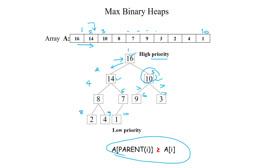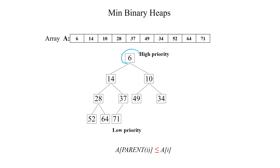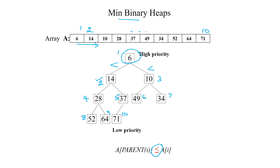In the min heap, the smallest element is at the root and gets the highest priority. The parent value is always less than its children — for example, 6 is less than its children 14 and 10. Nodes are arranged in ascending order in the table. So in a min heap, the minimum element is at the parent node, and in a max heap, the maximum value is at the parent node.